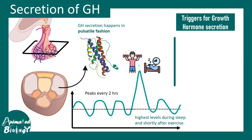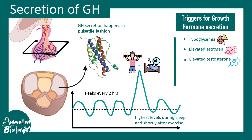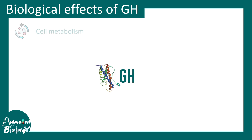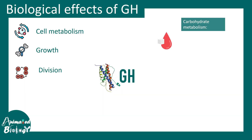There are many triggers for growth hormone secretion: low glucose levels, elevated estrogen or testosterone especially during puberty, stress, trauma, fever, and elevated secretion during certain stages of sleep. Growth hormone can alter different biological functions including cell metabolism, growth, and cell division.